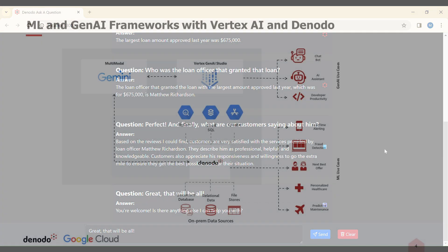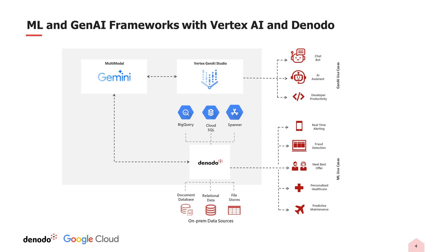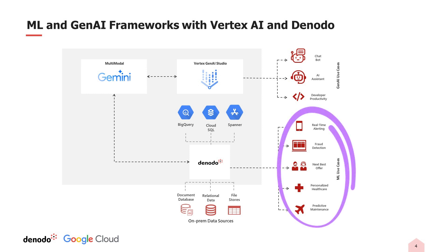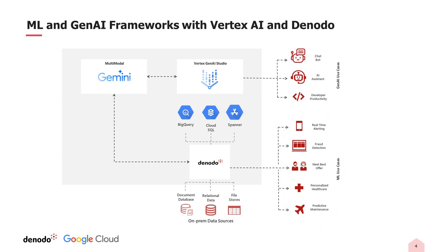This example is merely the tip of the iceberg. Denodo is continuously expanding its value proposition for our customers by integrating with Vertex's multimodal AI capabilities, enabling new types of virtual assistants, and boosting developer productivity. We are also working on supporting industry and use-case specific applications. These include real-time alerting, fraud detection, personalized marketing like Next Best Offer, personalized healthcare solutions, and predictive maintenance.